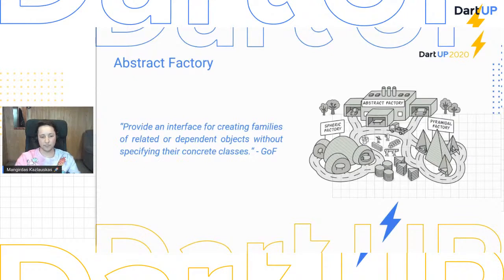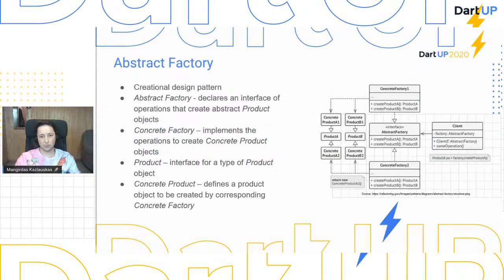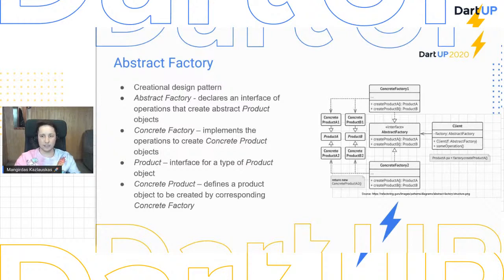Abstract Factory is a creational design pattern — its purpose is to create objects. First we define the abstract factory interface which specifies methods for object creation. Then we create specific factories which implement those interface methods. We have concrete factory one and concrete factory two, each implementing the interface. Each concrete factory corresponds only to a single variant of products — one factory is responsible only for the number-one objects, and the other factory for the second set of objects.